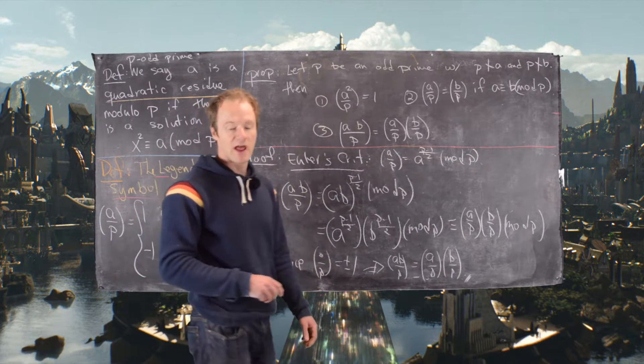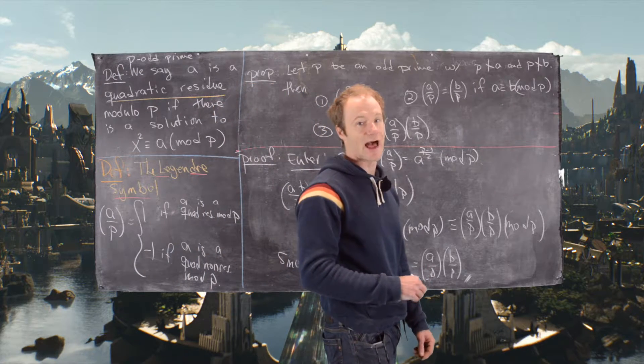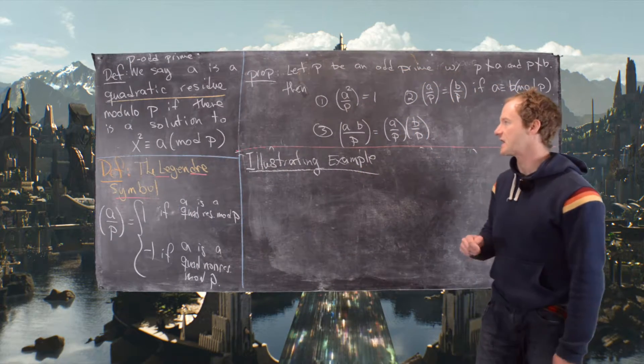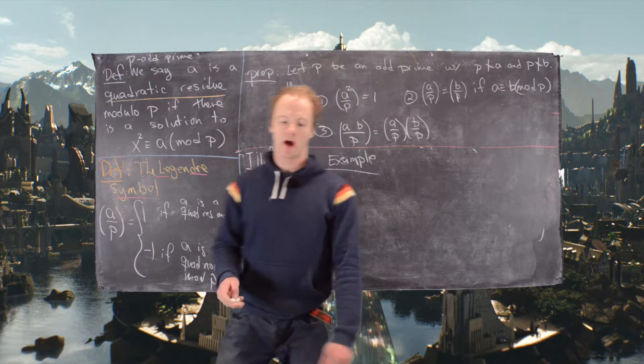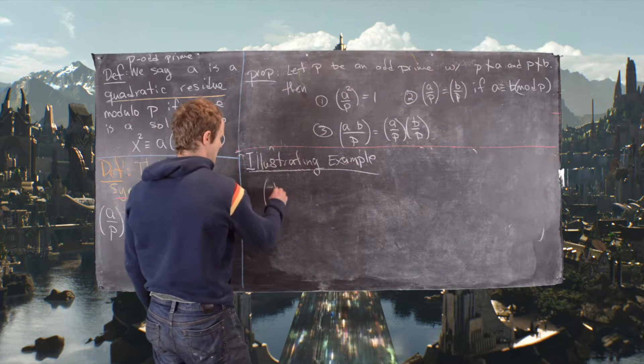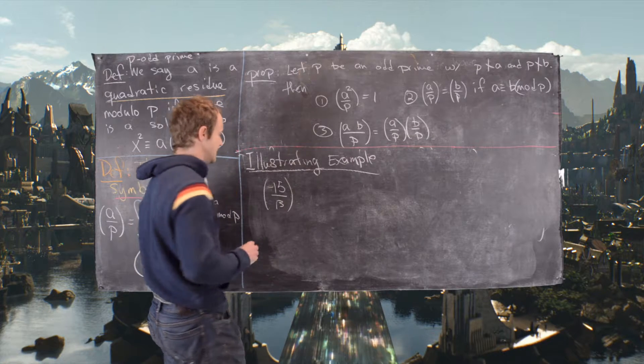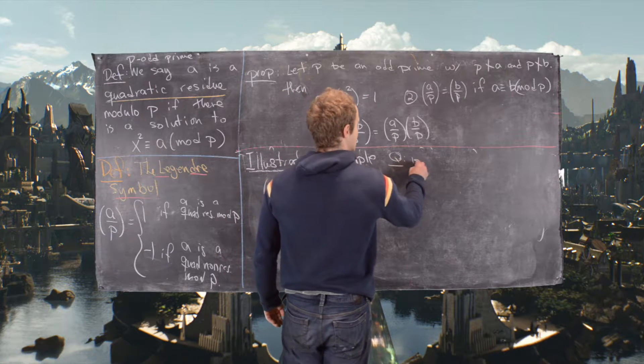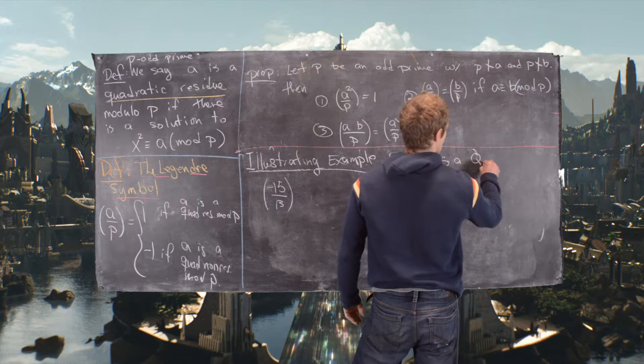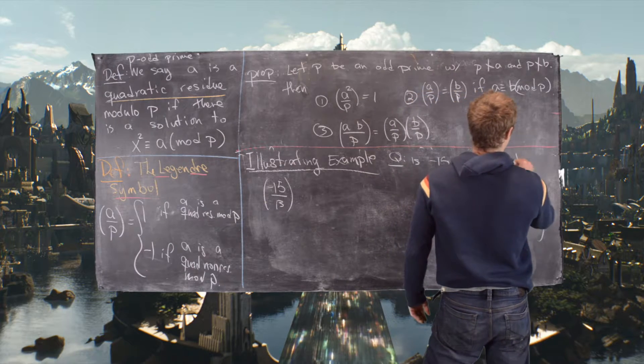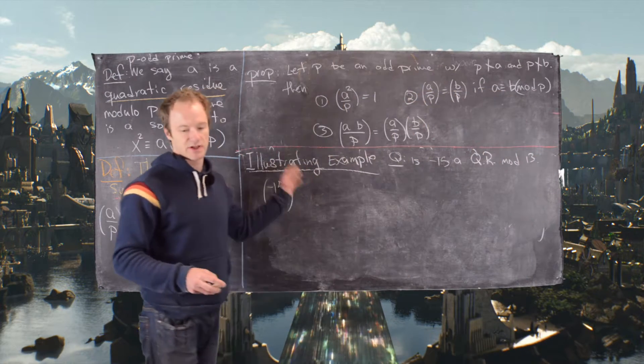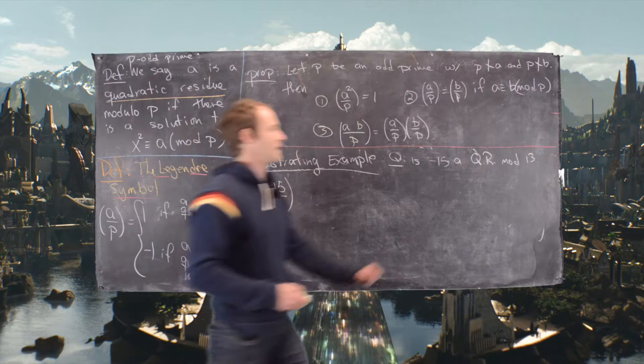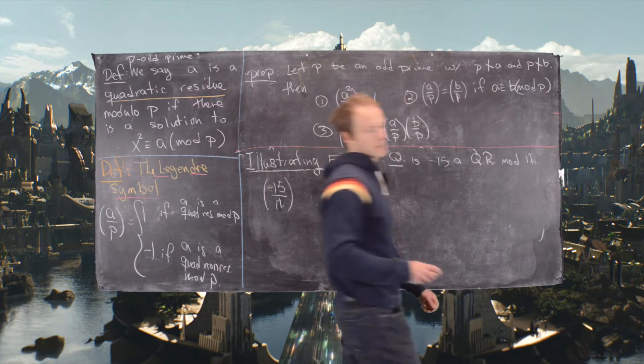I'll clean up the board and then we'll look at an example of an application of this proposition. So now we're going to look at an illustrating example or an application of the third part of this proposition. We want to look at negative 15 by 13. In other words, we're asking the question, is negative 15 a quadratic residue mod 13? Remember this Legendre symbol is like a question. Sorry, I want to work this mod 11, not mod 13.